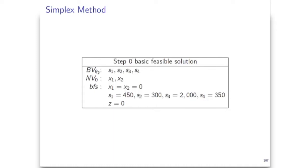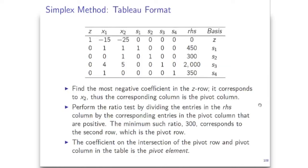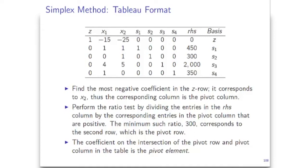Let's summarize the information. Our basic variables BV0 is the list of basic variables for step 0, the initial setup. Our non-basic variables at step 0 are given here. The basic feasible solution: on top we write the original variables from the problem formulation, below the slack variables, and Z is the value of the objective. This is the summary for the initial setup. Now we are ready to perform the first step.